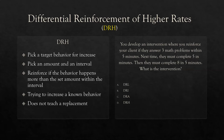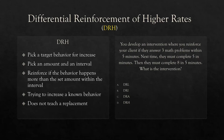The key becomes: how are we going to increase it? We're not just willy-nilly reinforcing the behavior — we do it systematically. You're going to pick an amount and an interval. Let's say the amount is two times and the interval is across two minutes. Reinforce if the behavior happens more than the set amount within the interval. So if the behavior happens more than two times in two minutes, reinforce. We're trying to increase a known behavior.